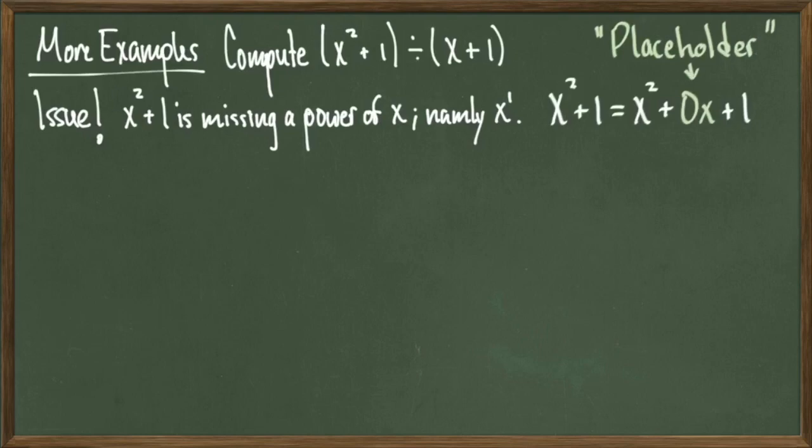However, adding it into the polynomial doesn't change the value of the polynomial in any way, and it gives us the advantage of having every power of x present. We have an x squared, we now have an x to the 1 showing up, and we've got a constant term. This is exactly what we want.